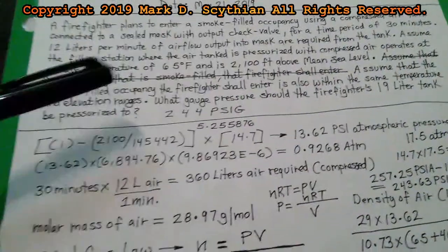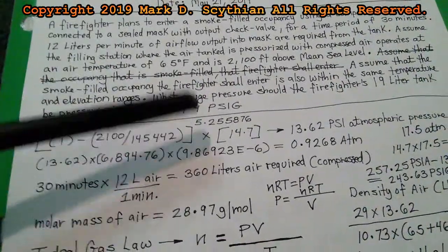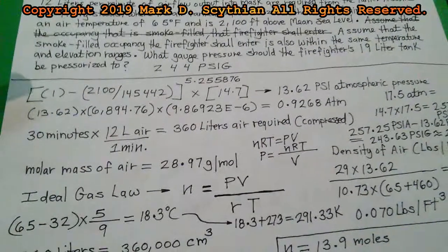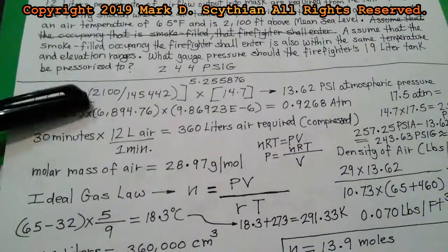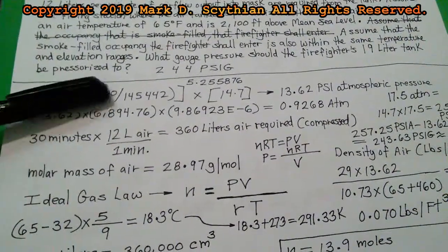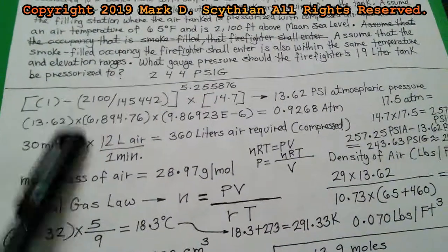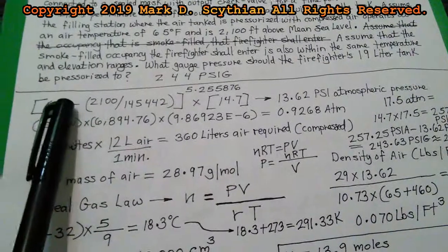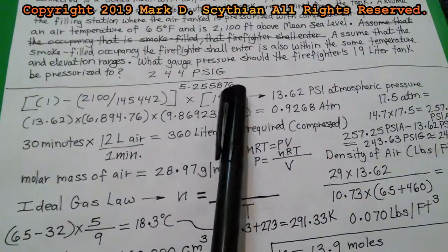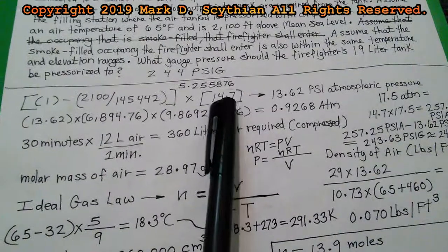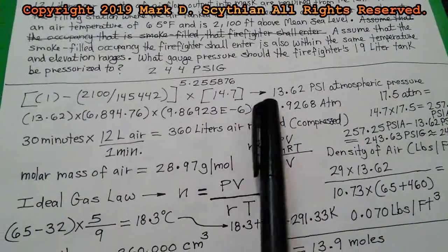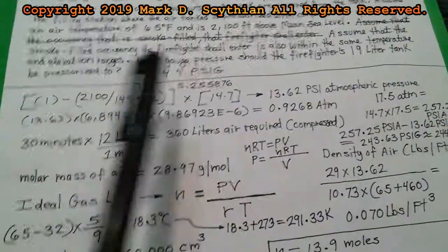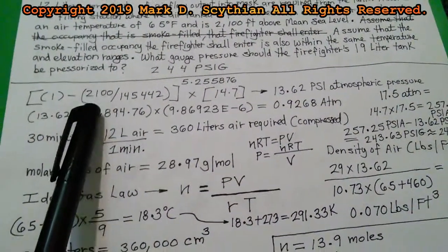I've already worked this calculation out. It's 244 psi gauge of compressed air and that is calculated by first solving for the atmospheric pressure when at 2100 feet above mean sea level. So, you can put this 2100 into this constant, subtract it from 1 to the 5.25876 power times the standard atmospheric pressure at sea level.